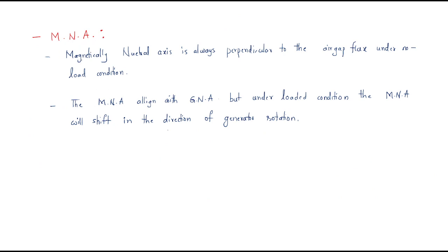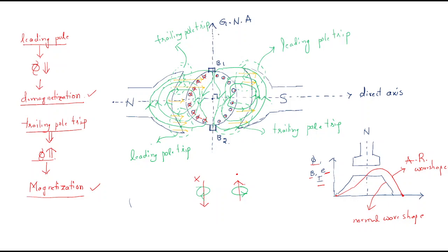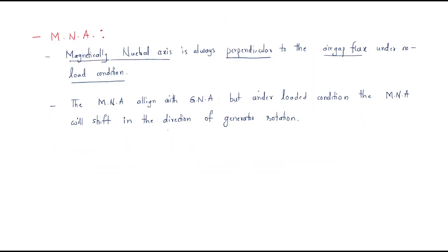The next important thing is MNA — the Magnetically Neutral Axis. MNA is always perpendicular to the air gap flux. Under no-load condition, the flux follows the same path, so the geometrically neutral axis and the magnetically neutral axis are both the same. Under no-load condition, the MNA aligns with the GNA.